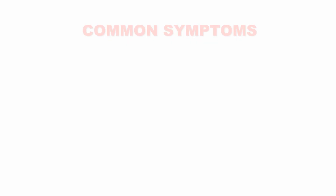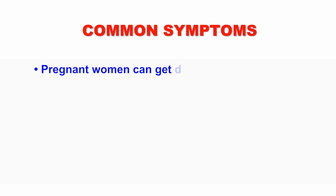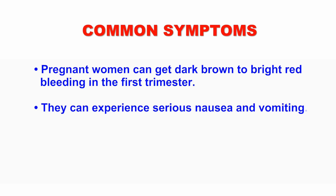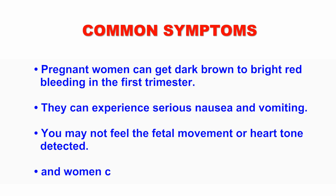At first, a molar pregnancy can seem like a normal pregnancy, but most molar pregnancies make specific symptoms. Pregnant women can get dark brown to bright red bleeding in the first trimester. They can experience serious nausea and vomiting. You may not feel fetal movement or heartbeat when detected. And women can experience discomfort or pain.